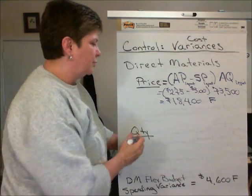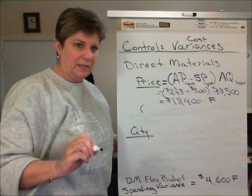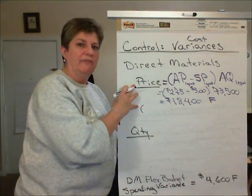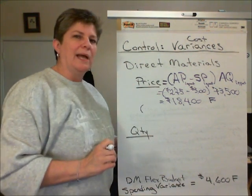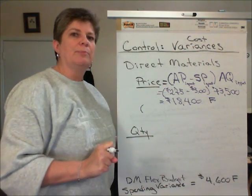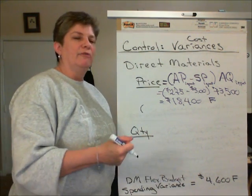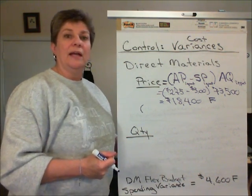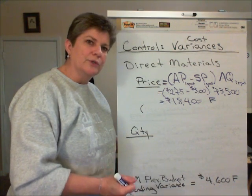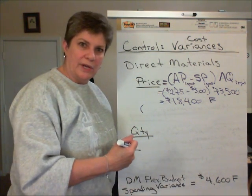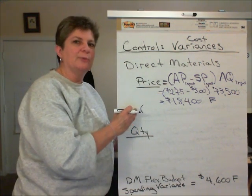Materials price variances are the responsibility of the purchasing manager. The purchasing manager is the individual who contacts our suppliers, negotiates with our suppliers about discounts for quantity and early payment, and also deals with getting the materials transported to us, including dealing with transportation and freight charges. So purchasing is responsible for this variance.